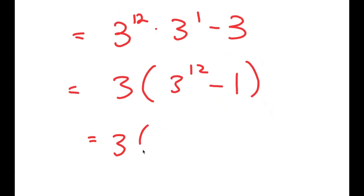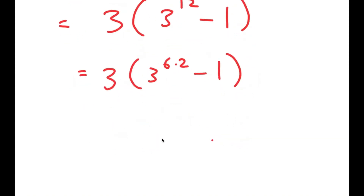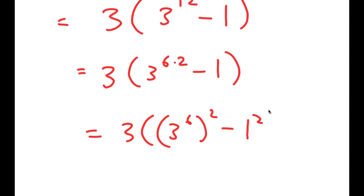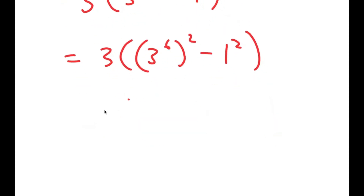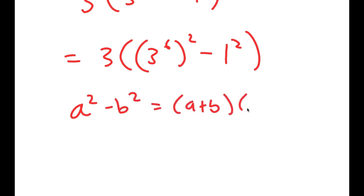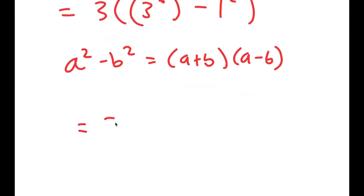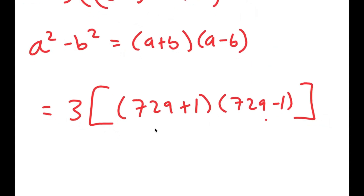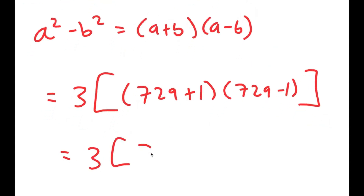Now 3 to the power of 12, I'm going to rewrite as 3 to the power of 6 times 2, which is equal to 3 times 3 to the power of 6 to the power of 2 minus 1 squared. I'm writing this like this because now I can use the property a squared minus b squared equals a plus b times a minus b. So this turns into 3 times 729 plus 1 times 729 minus 1, which is equal to 730 times 728.